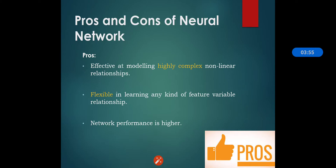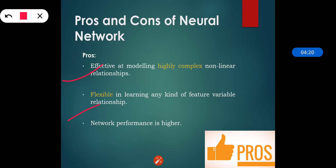The pros of neural networks: they are effective at modeling highly complex non-linear relationships. Because neural networks can have many layers, various parameters are present, making them effective at such modeling. They are also flexible in learning any kind of feature-variable relationship — we don't worry about the structure of data, and network performance is higher as more training data consistently leads to better performance.